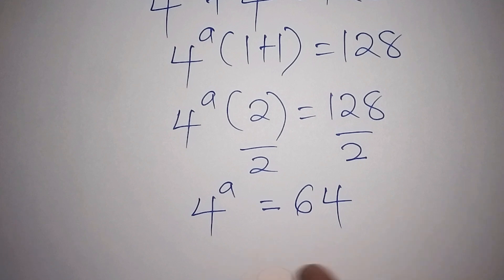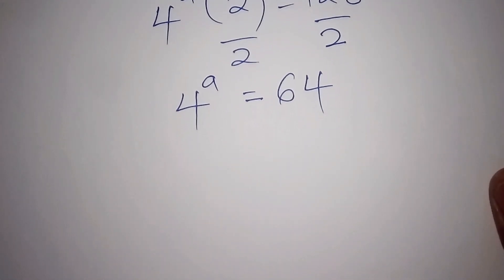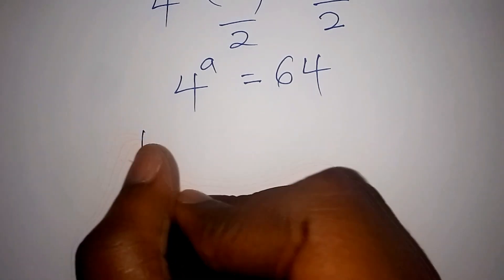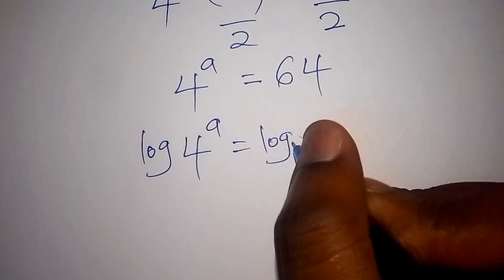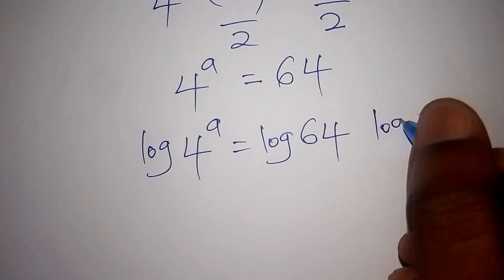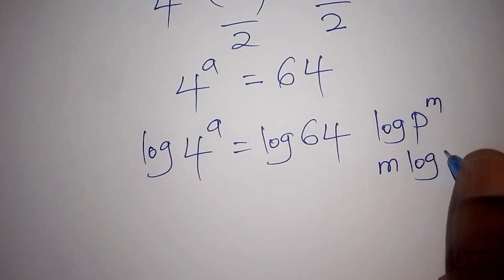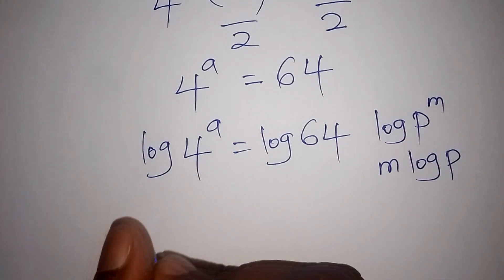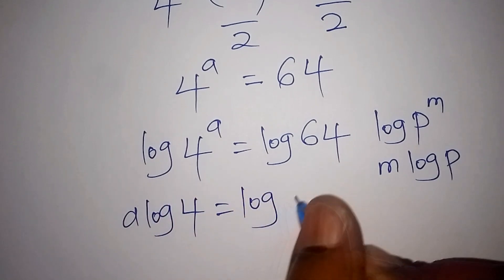Now, how do we work out the value of a? We introduce the log on both sides. So we have log of 4 to the power of a equals log of 64. Remember that log of p to the power of m can be written as m times log of p. So log of 4 to the power of a becomes a times log of 4, equals log of 64.